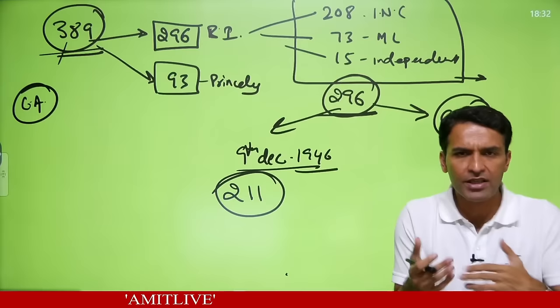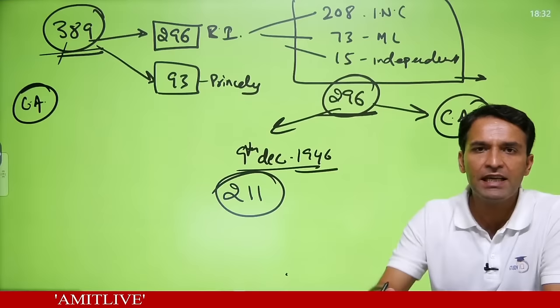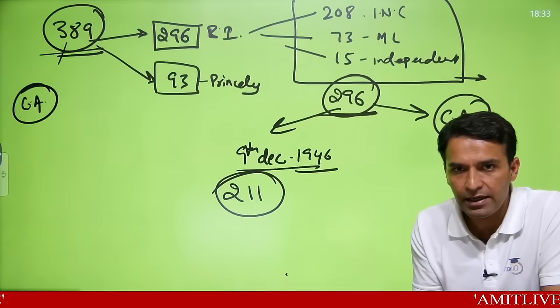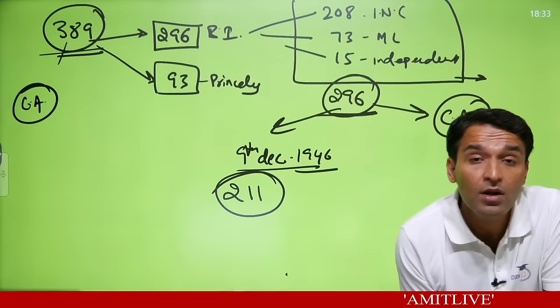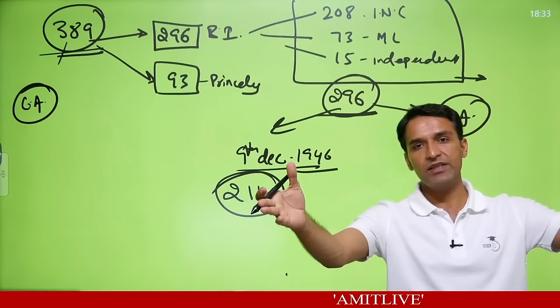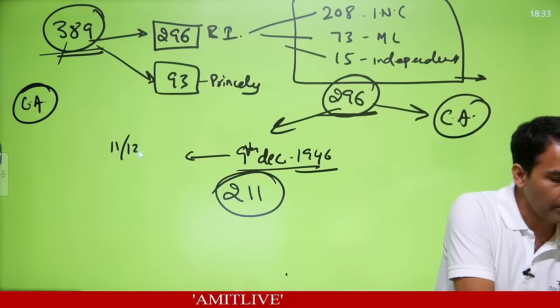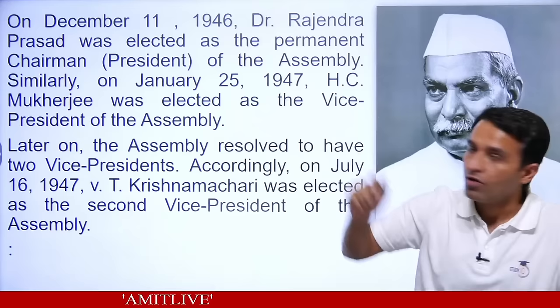On 9th December 1946, Dr. Sachidanand Sinha was the president addressing everyone, and his purpose was to conduct elections. On 11th December 1946, Dr. Rajendra Prasad was elected as the permanent president of the assembly. H.C. Mukherji was elected as Vice President, and later T. Krishnamachari was also elected as another Vice President.